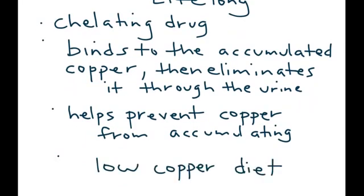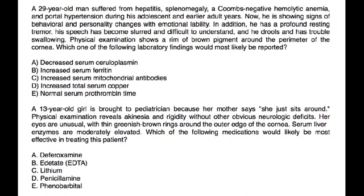Let's look at a vignette. A 29-year-old man suffered from hepatitis, splenomegaly, Coombs-negative hemolytic anemia, and portal hypertension during his adolescent and earlier adult years. Now he is showing signs of behavioral and personality changes with emotional lability. He also has a profound resting tremor, slurred speech, difficulty swallowing, and drooling.